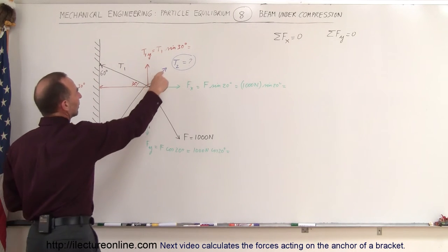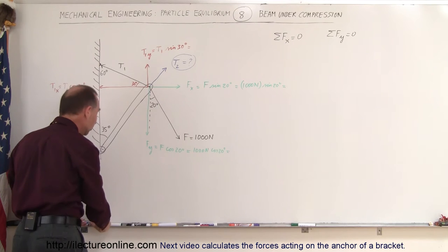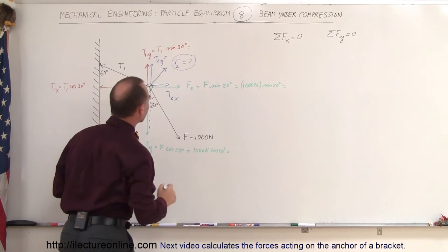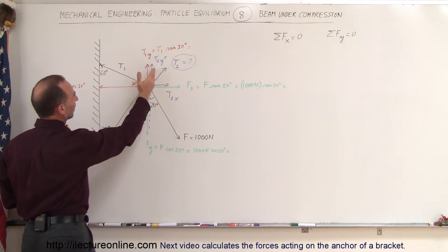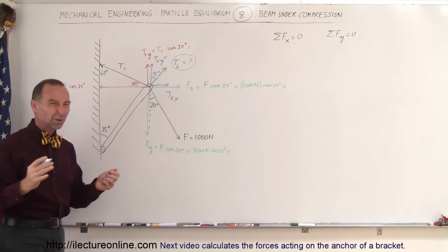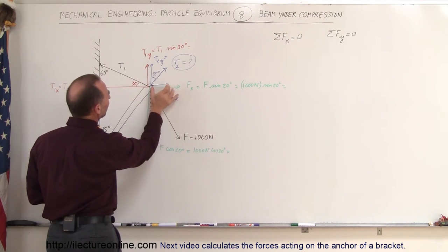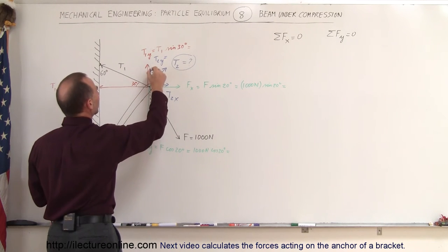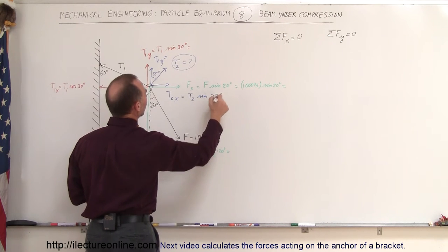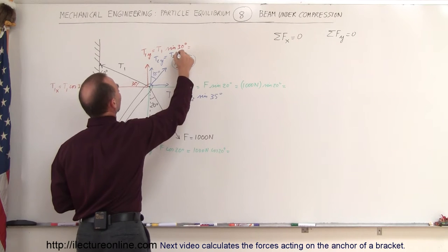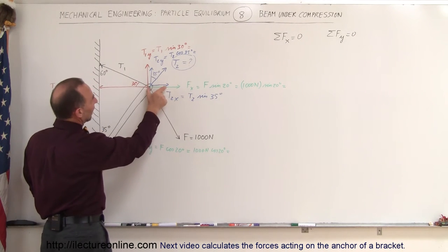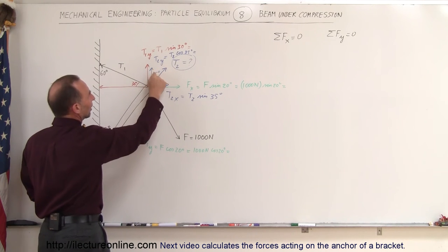Now we still have to find the two components of T2 — the beam force. We want to find T2_x and T2_y. We have a 35 degree angle for the beam. T2_x is the opposite side to the angle, so T2_x equals T2 times the sine of 35 degrees. T2_y equals T2 times the cosine of 35 degrees. Again, it seems odd to use sine for the x component and cosine for the y component, but we just have to recognize that this component is the opposite side to the angle, so we use sine.